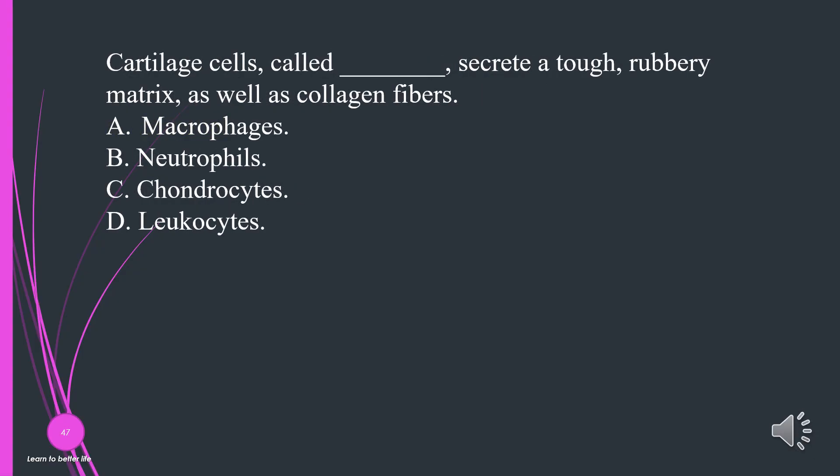Cartilage cells called what, secrete a tough, rubbery matrix, as well as collagen fibers? A. Macrophages. B. Neutrophils. C. Chondrocytes. D. Leukocytes. The answer is C, chondrocytes.